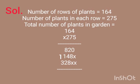5 fours are 20, carry 2. 6 fives are 30 plus 2 is 32. So we will write 2 and carry 3. 5 ones are 5 plus 3 is 8.